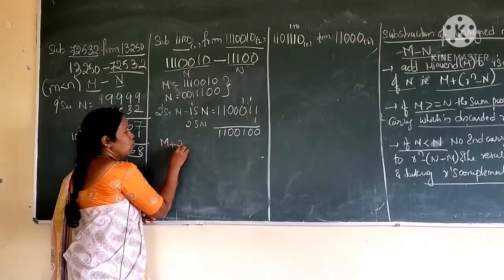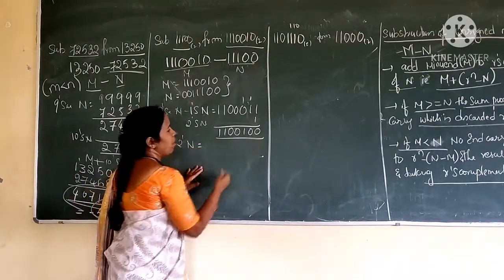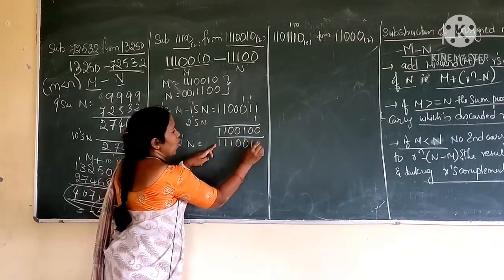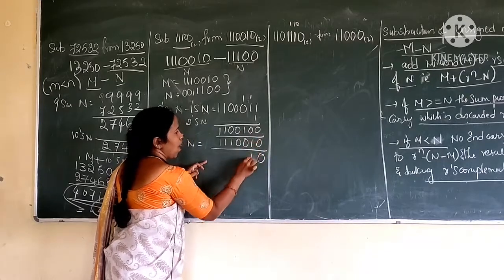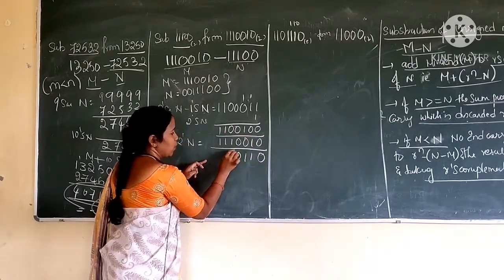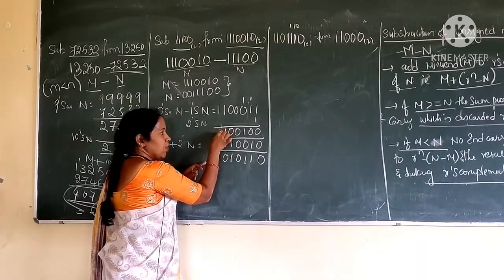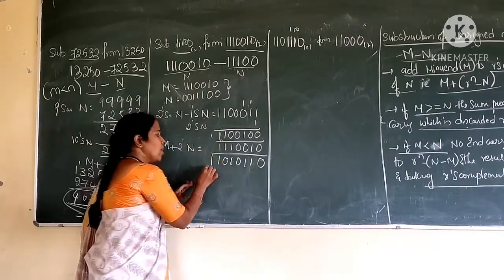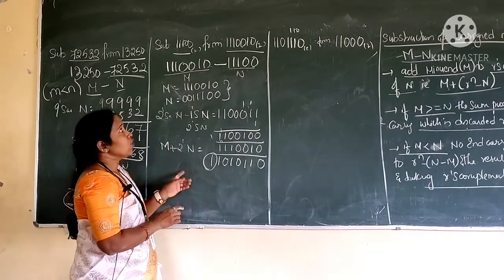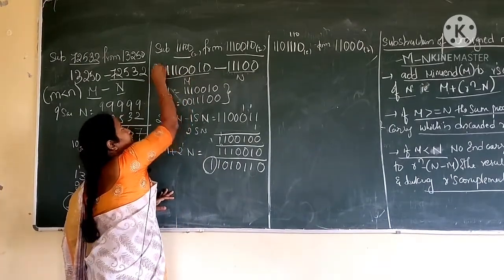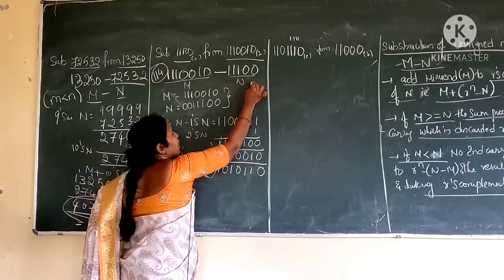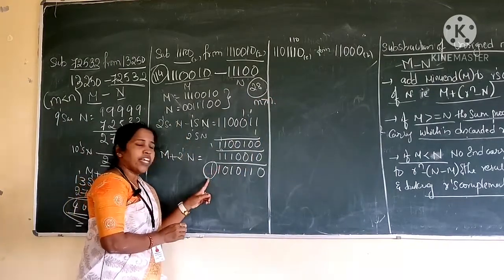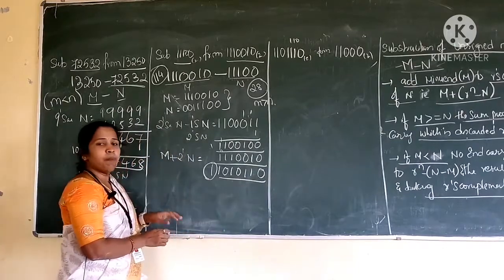So m plus 2's complement of n. Already 2's complement is 1100100. I should add m, which is 1110010. Performing the addition gives a result with end carry generated. If you find the decimal value: m equals 114 and n equals 28. So m is greater than n, and whenever m is greater than n, an end carry is generated.